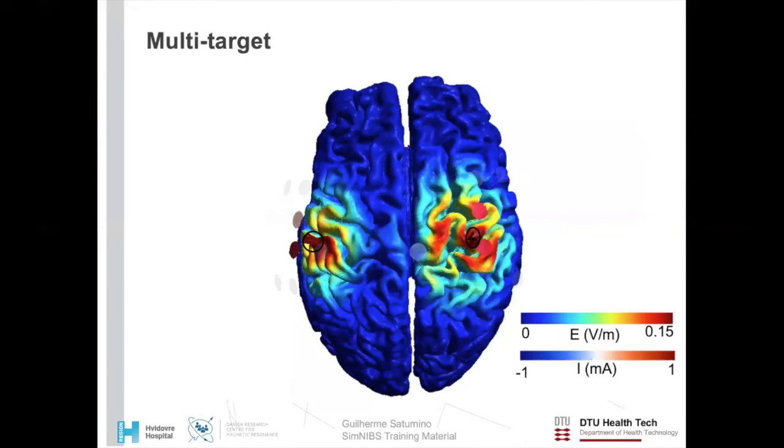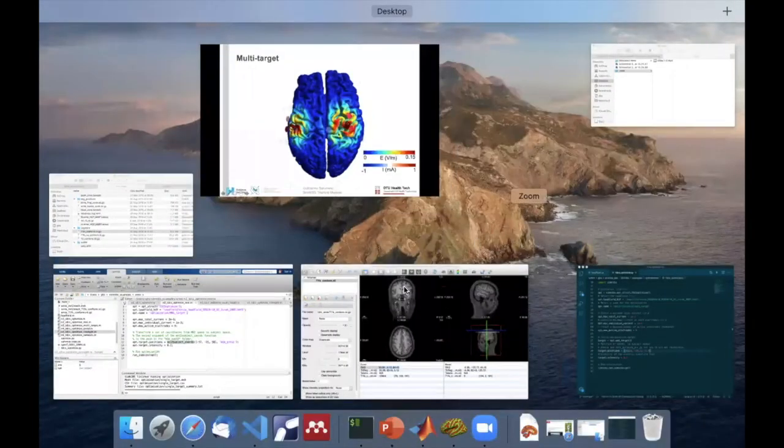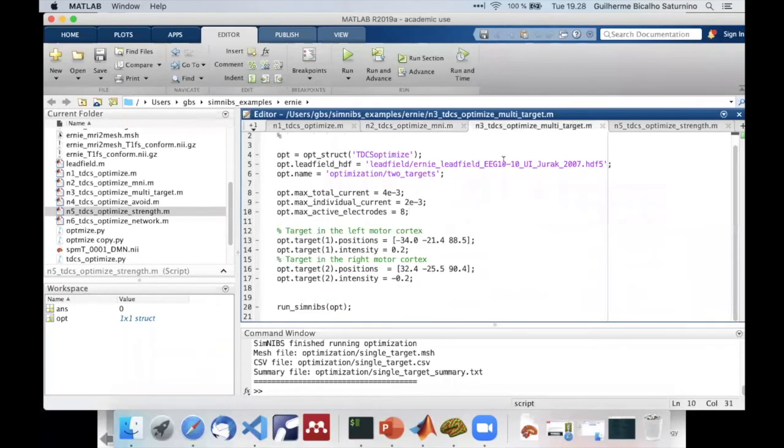The formulation that SimNIBS uses for optimization problems is very flexible. It allows for the user to define multiple targets, which would be considered independently to a larger extent. In this example, we define two targets, one in each hemisphere. As you can see, we have basically one focus here and another focus there. And here we have the code to run this kind of optimization. It's also pretty straightforward. We just set one target and set the other target just as we set the previous one.